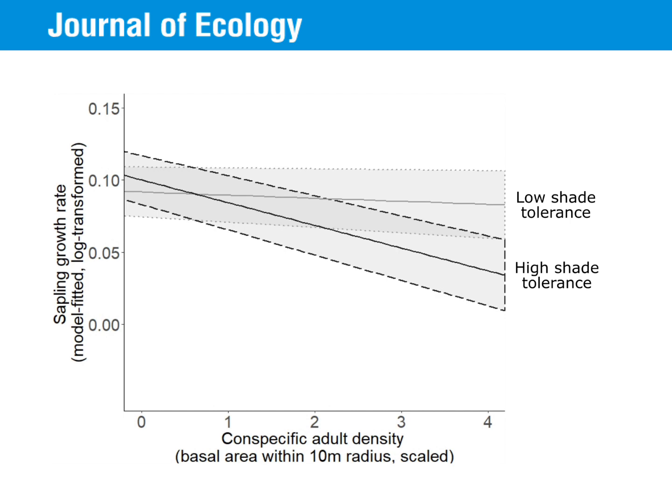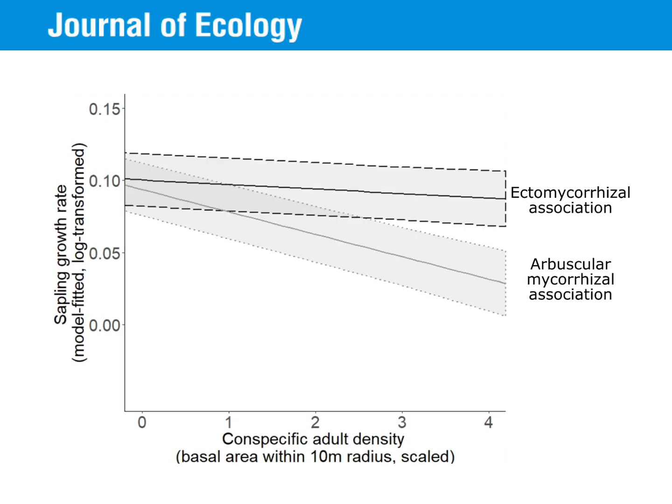In terms of mycorrhizal type, we found that when there's a high density of conspecifics nearby, seedlings don't respond differently to the two different mycorrhizal types. But saplings associated with ectomycorrhizae show higher growth rates than those associating with arbuscular mycorrhizae under the same conditions.